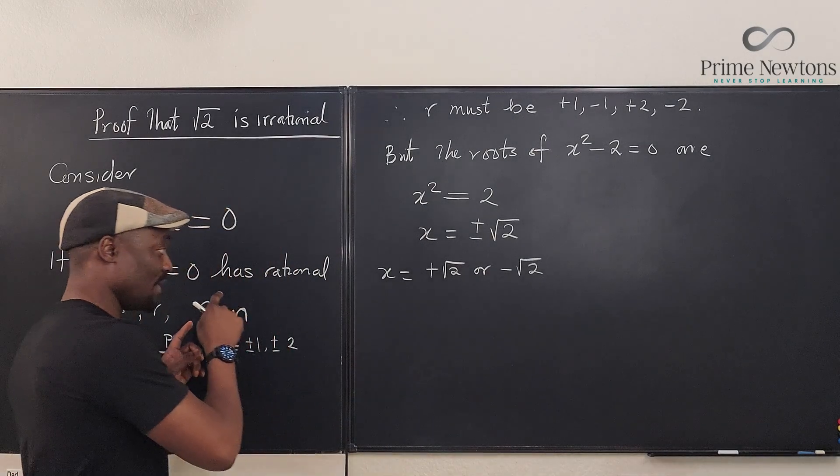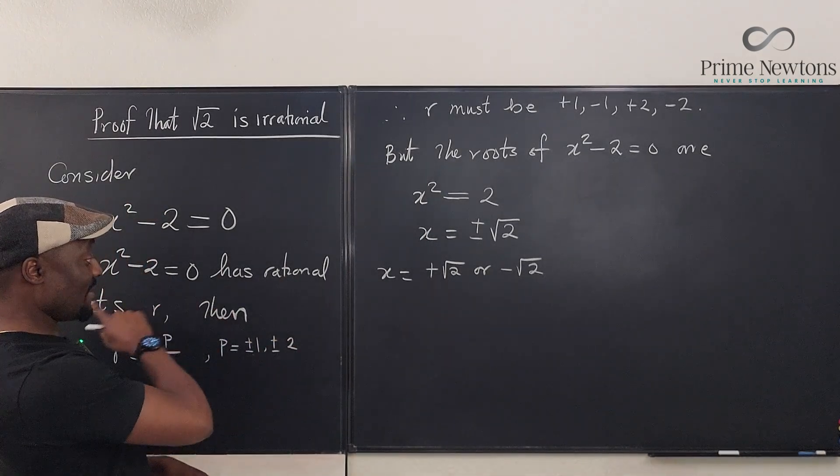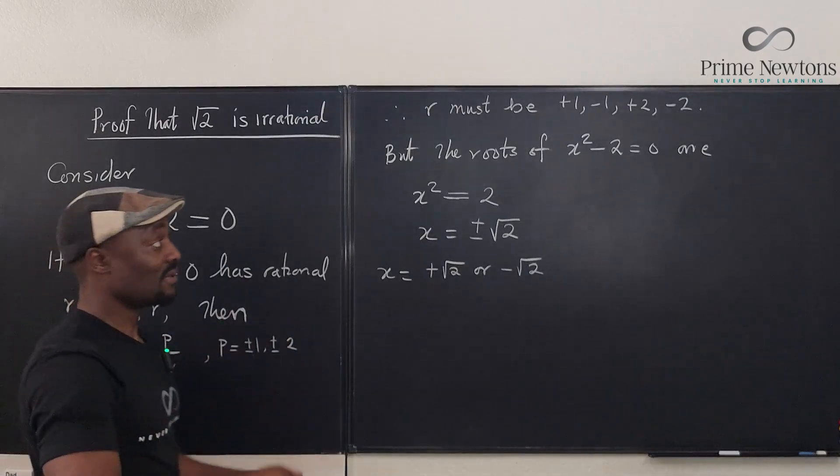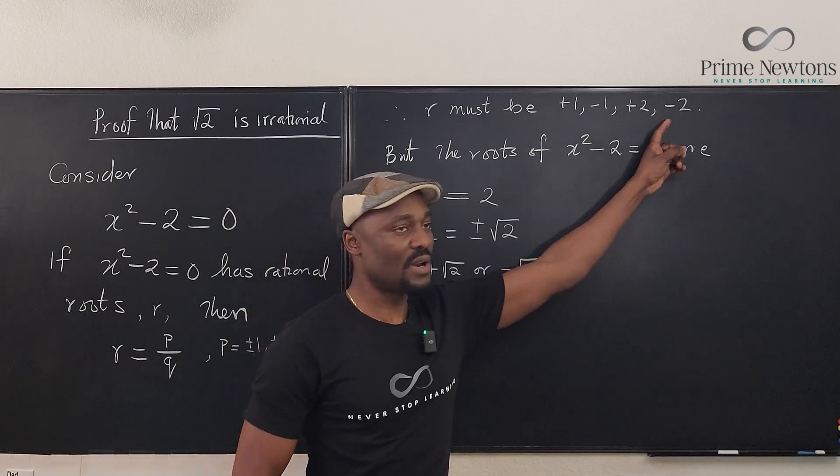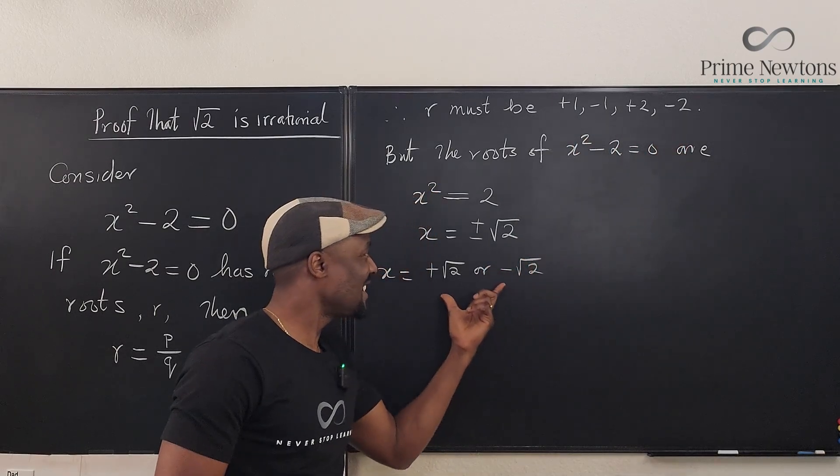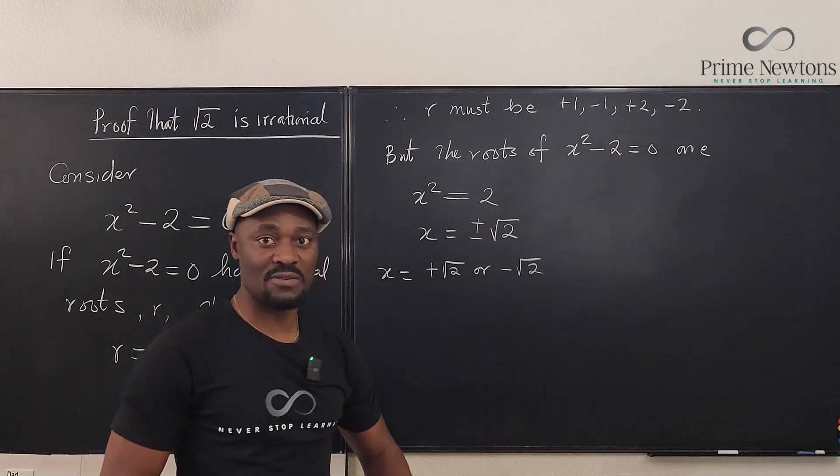So what do we see? Well, according to the rational roots theorem, if they're rational, they have to be one of these. But it doesn't look like this is one of these. And because this is not in the set of rational solutions, it is not a rational number.